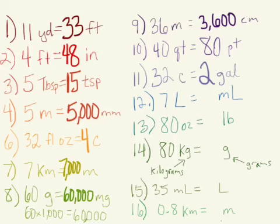Number twelve. Seven liters is equal to how many milliliters? Milli means thousandth. So that means that for every one liter, there are a thousand milliliters. But we have seven liters. We have seven groups of a thousand. So we have seven thousand milliliters.